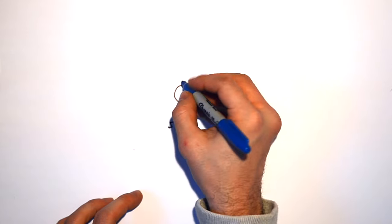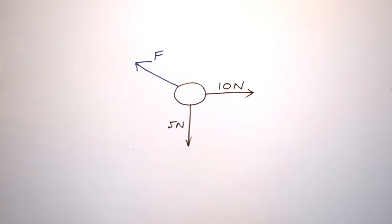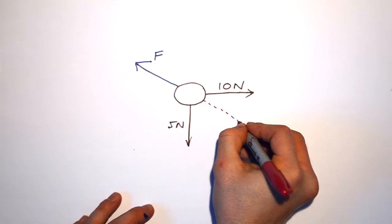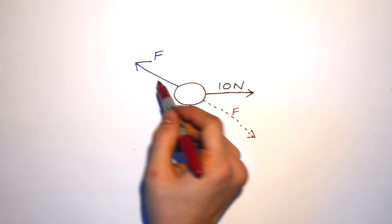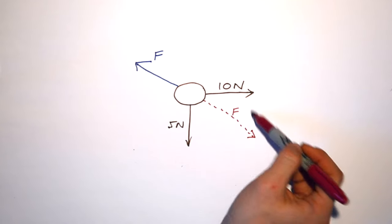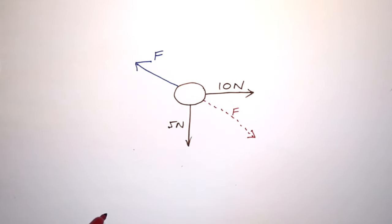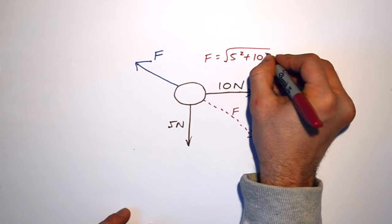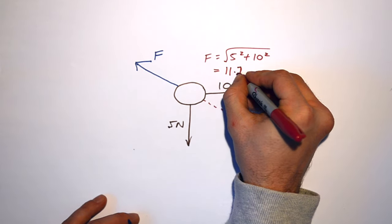Hopefully you said it would have to be applied in the opposite direction — I'll call that F. It should be directly opposite the resultant force due to these two forces. In order for this ball to be in equilibrium and not accelerate, these forces have to be balanced. Whether you're finding the resultant of the two forces or finding the equilibrium force, you're finding the same magnitude just in opposite directions. I can find F using Pythagoras: F equals the square root of 5 squared plus 10 squared.